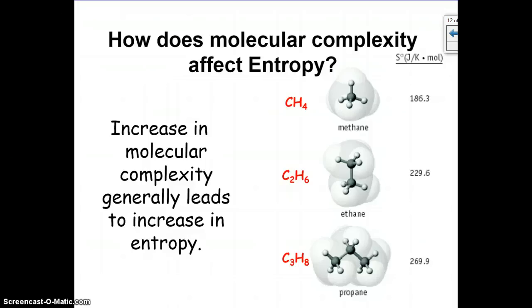Now molecular complexity also affects entropy. So the more complex a molecule, the higher the entropy. So if you're going from CH4 to C2H6, C2H6 will have more entropy. And then C3H8 will have even more entropy. So the more complex they get, the more entropy that they have.